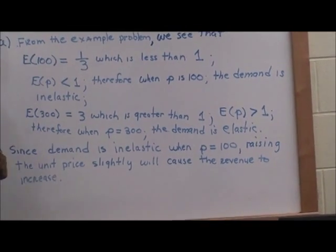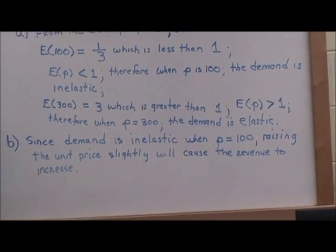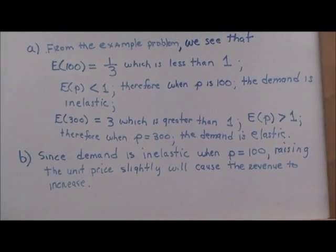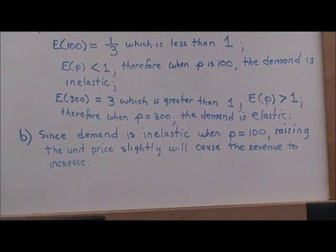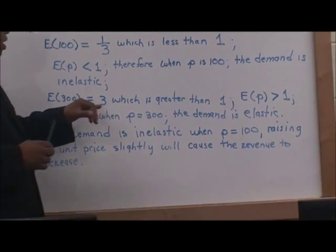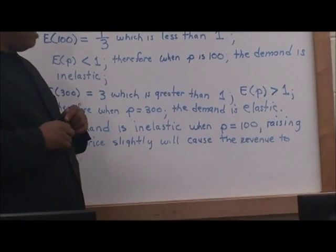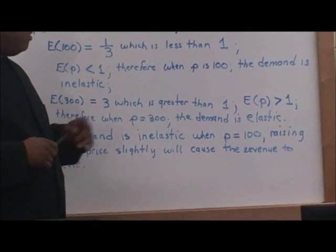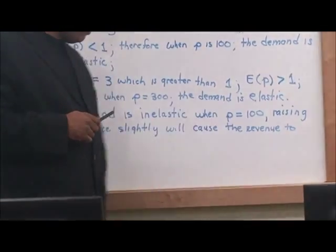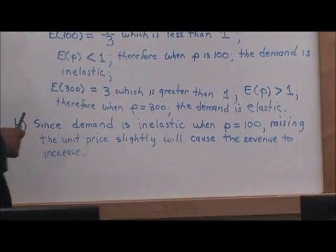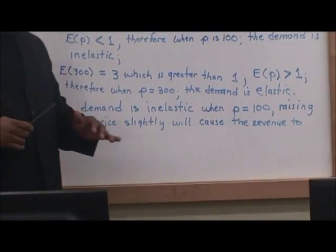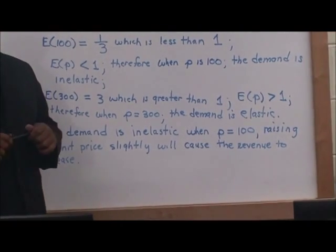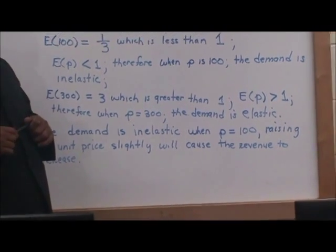Now let's look at P equals 300. At P equals 300, we got the value of 3, and 3 is greater than one. So we can conclude that at P equals 300, the demand is elastic.